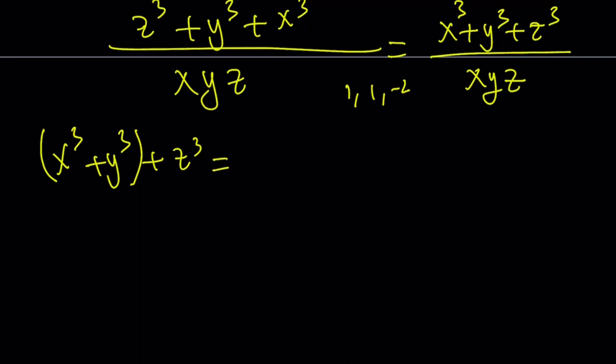Ready? x cubed plus y cubed can be written as x plus y cubed minus 3xy times x plus y. You know what? This is something we use for cubic formula as well. So, that should be familiar to you, hopefully. And then plus the z cubed.